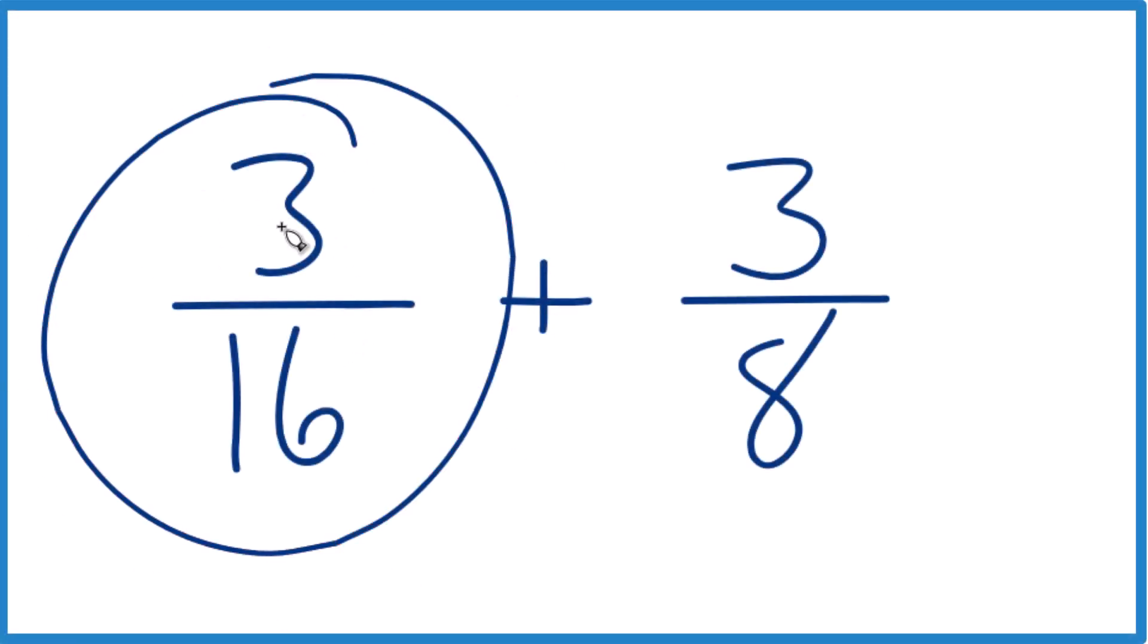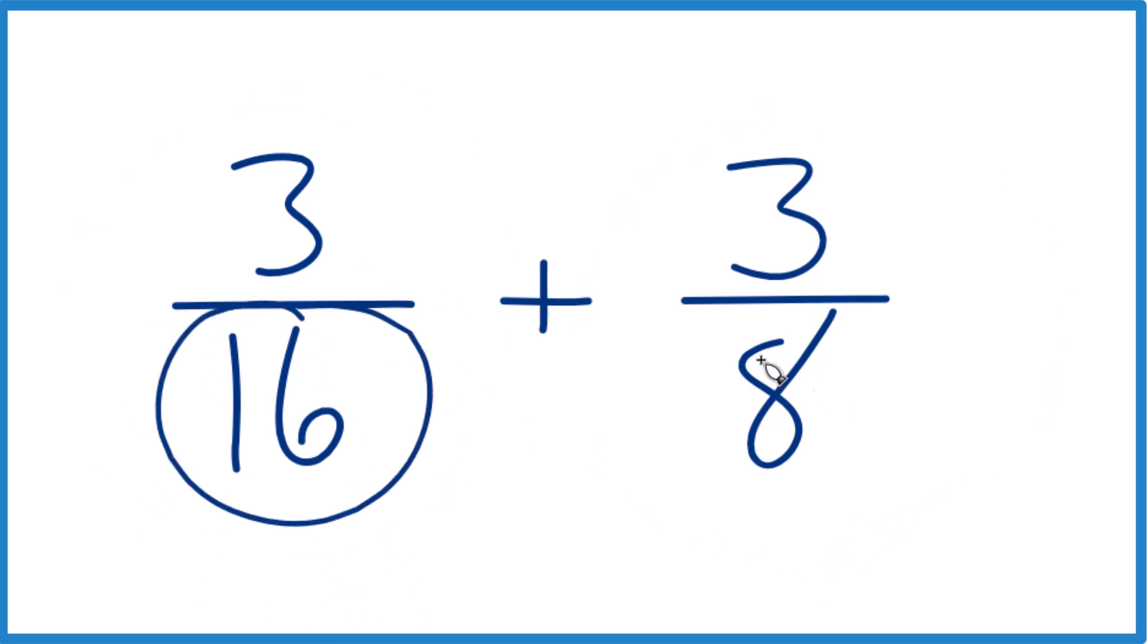So how do you find 3/16 plus 3/8? I'll show you. What we need to do is get this denominator to be the same. Then we're just going to add the numerators, that'll be it.